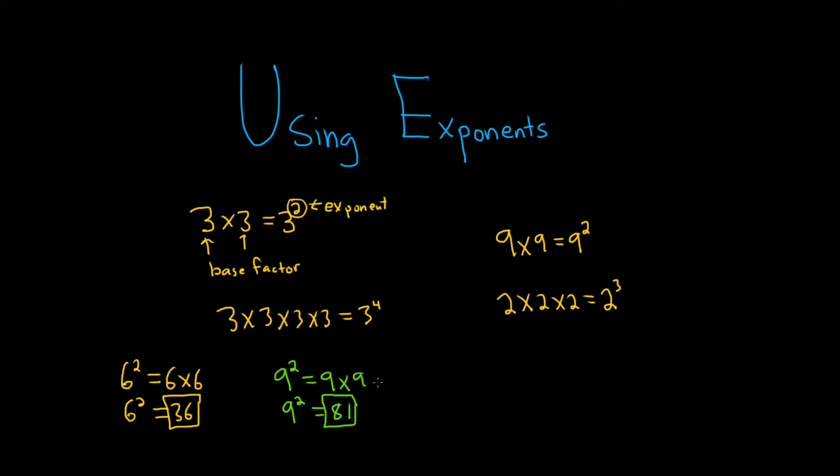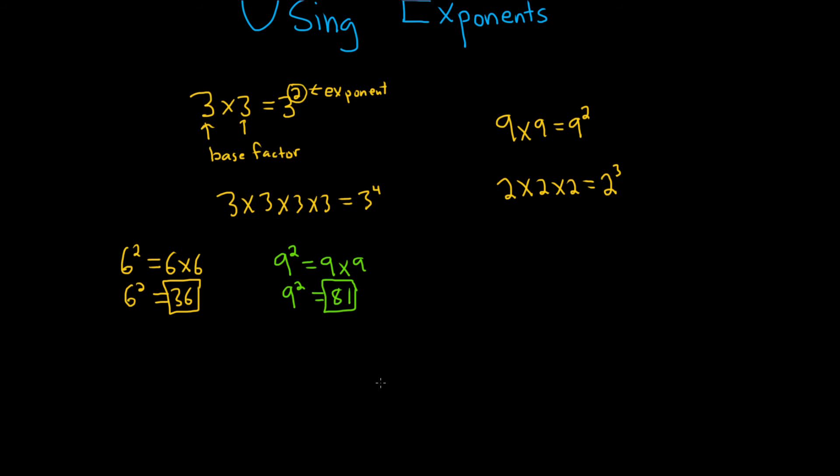Sometimes you can have numbers that have more than one digit. So you can have a base that has two digits and that makes it harder. For example, say we have 30 squared. So 30 squared means 30 times 30. And you can work this out the long way and you'll basically get 900. So 900 is the answer here.